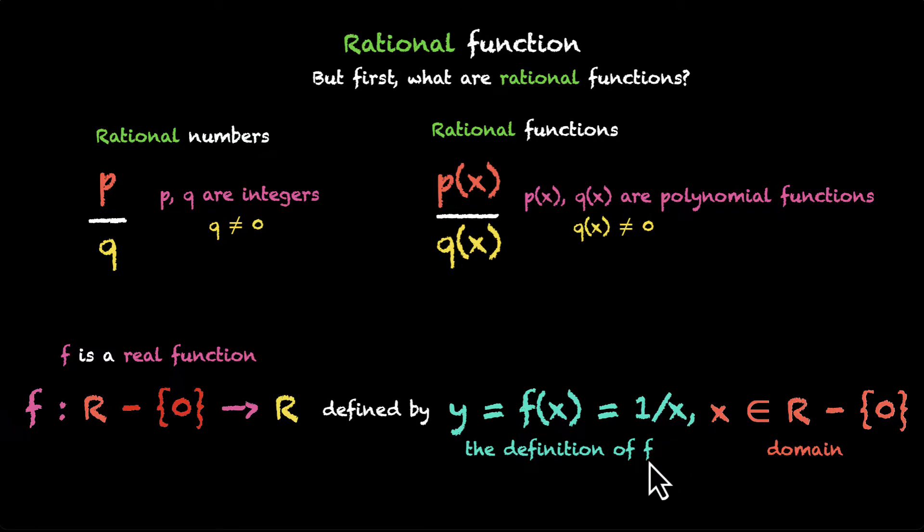But wait, how do we know this is a polynomial function? Let's look at it. This is 1 by x. 1 is a polynomial function. Yes, it is. Is x a polynomial function? Yes, x is also a polynomial function.